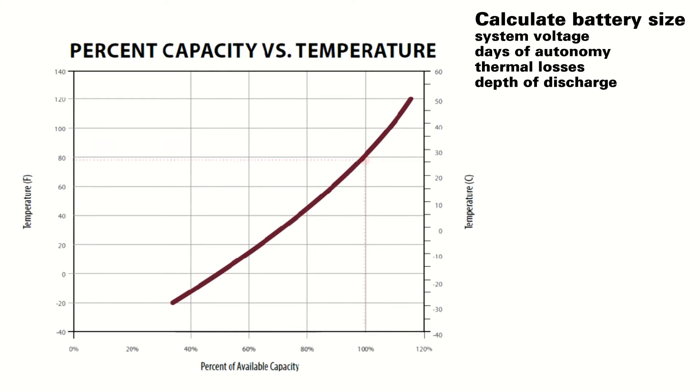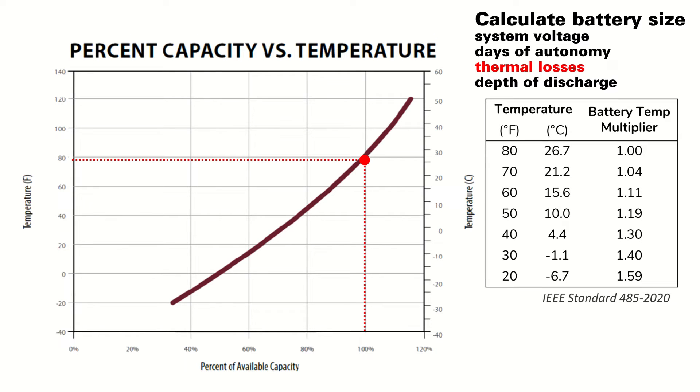You may need another power source like a generator if you choose fewer days of autonomy, but choosing more days increases system cost significantly. In this case we'll select three days of autonomy, which should provide sufficient reserve power for our application. While batteries are typically rated at 77°F (25°C), their capacity drops at lower temperatures. We account for this using a battery temperature compensation factor from the manufacturer's specification or IEEE standards. For a lead acid battery stored at an average winter temperature of 50°F, the temperature correction factor is 1.19.